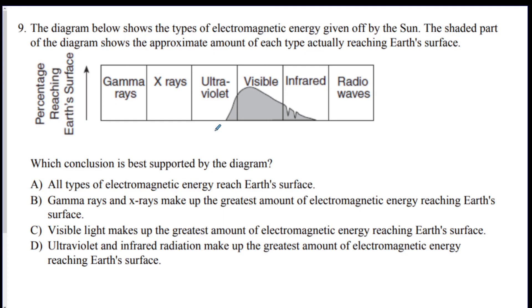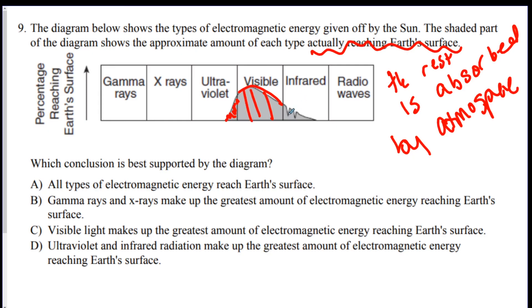Number 9. Last one. The diagram shows the types of electromagnetic energy given off by the sun. Remember, it's all of the types. The shaded part shows the approximate amount of each type that actually reaches the Earth. And, we said the rest is absorbed by the atmosphere. So, it seems like, by the chart, we get a little bit of ultraviolet, a lot of visible light, and a little bit of infrared. This is heat. This is what actually gets through. So, now, look at your choices. All types of energy reach the Earth's surface? No, because these gamma's empty, x-ray's empty, and radio's empty. Gamma and x-rays make up the greatest amount reaching the Earth's surface? No. They have none. Visible light makes up the greatest amount of energy reaching the Earth's surface? Yes.